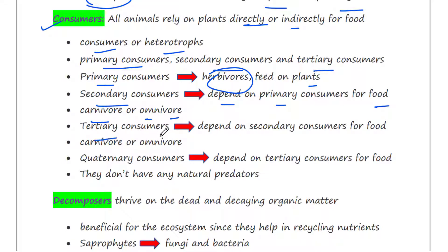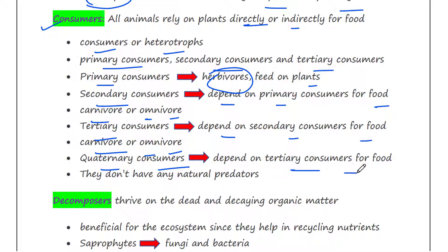Tertiary consumers depend on secondary consumers for food and can either be carnivores or omnivores. Quaternary consumers are not always present; they are sometimes present and they depend on tertiary consumers for food. They don't have any natural predators.